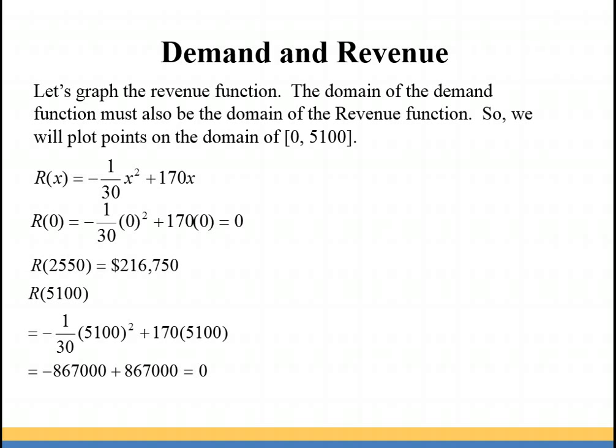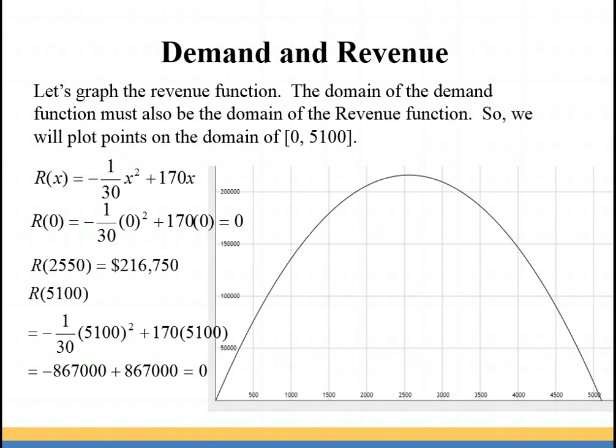Then we have our vertex. And when I plug in the 5100, I also got out 0. So those two endpoints that were on the demand function of the domain are also going to be the endpoints of the domain for the revenue function. So we're going to graph that. Your revenue function is spanning from 0 to 5100. It doesn't make sense to go outside of quadrant 1 because you don't want to have a negative number of units sold or a negative revenue. So we're restricting it to quadrant 1, so our domain is going to be from 0 to 5100. And that means that the range for the revenue function is going to go from 0 to 216,750.